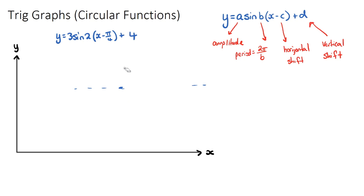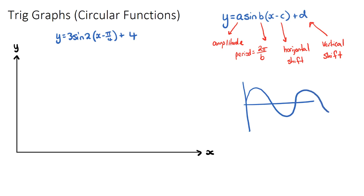The next thing I like to look at is the vertical shift, which in this case is four. That tells me our function will be shifted up four units. Because we have a sine function — and sine functions start at their midpoint — our midpoint and starting point will be at four. A cosine function, by contrast, starts at its maximum. So I'm going to put four on my y-axis and draw a dotted line across.